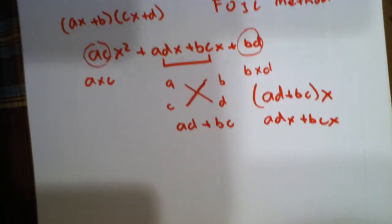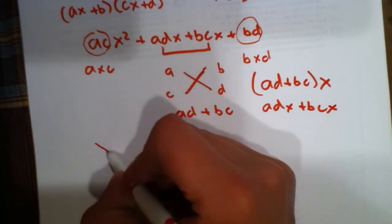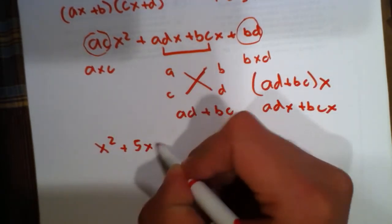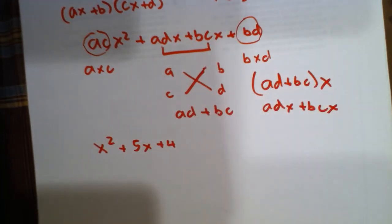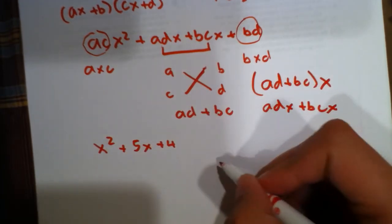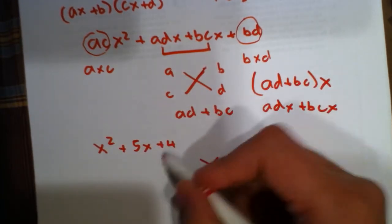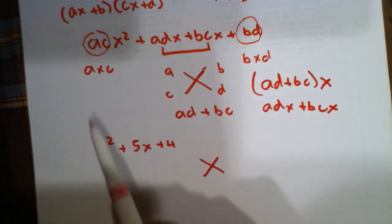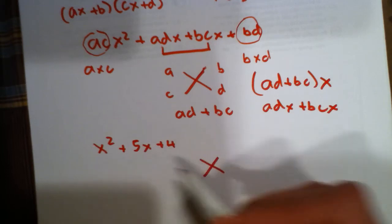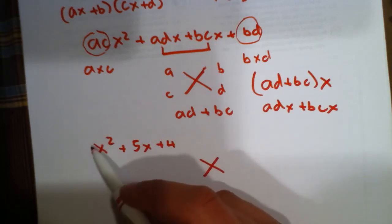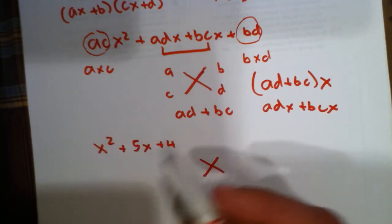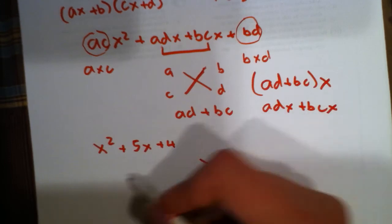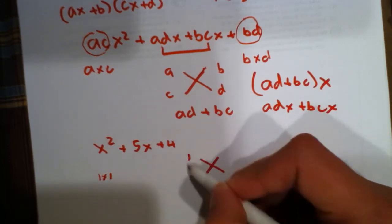Let's do an example. x squared plus 5x plus 4. Now, if we make a cross, and 4 is bd, and the coefficient from the x squared term is ac, the only way to get 1 in front of x squared is just multiplying 1 times 1. So, that's that.